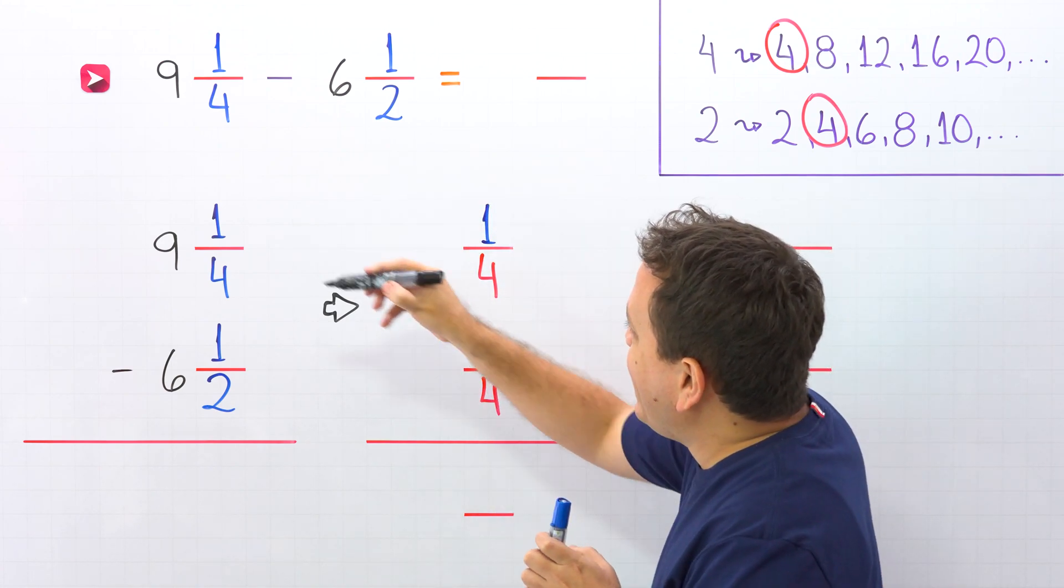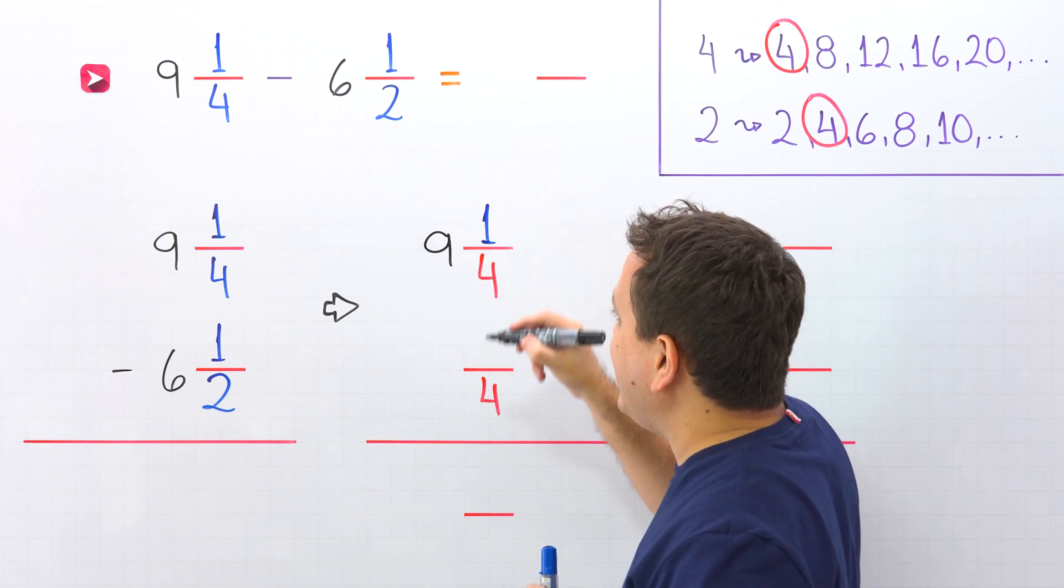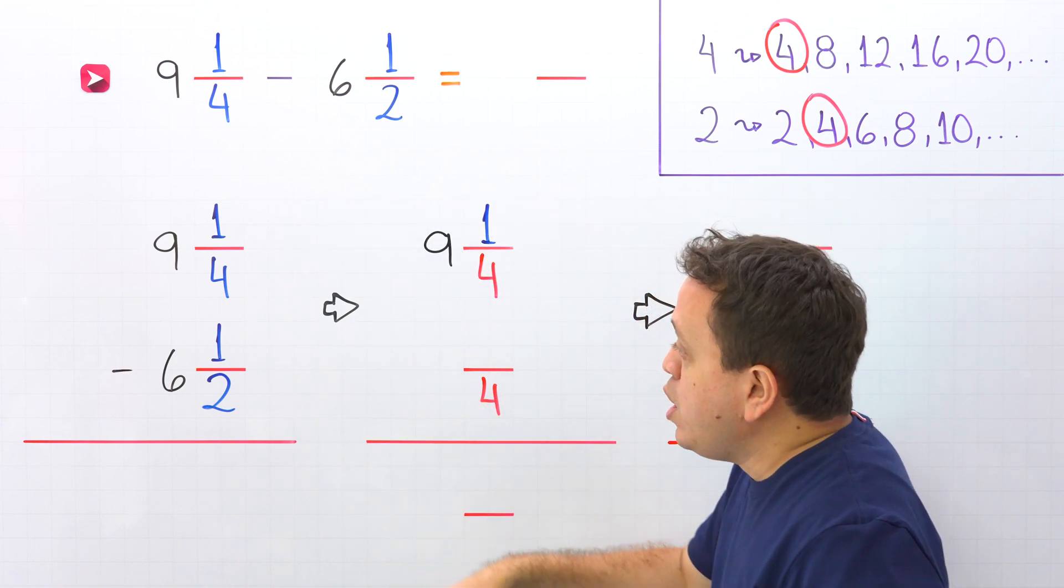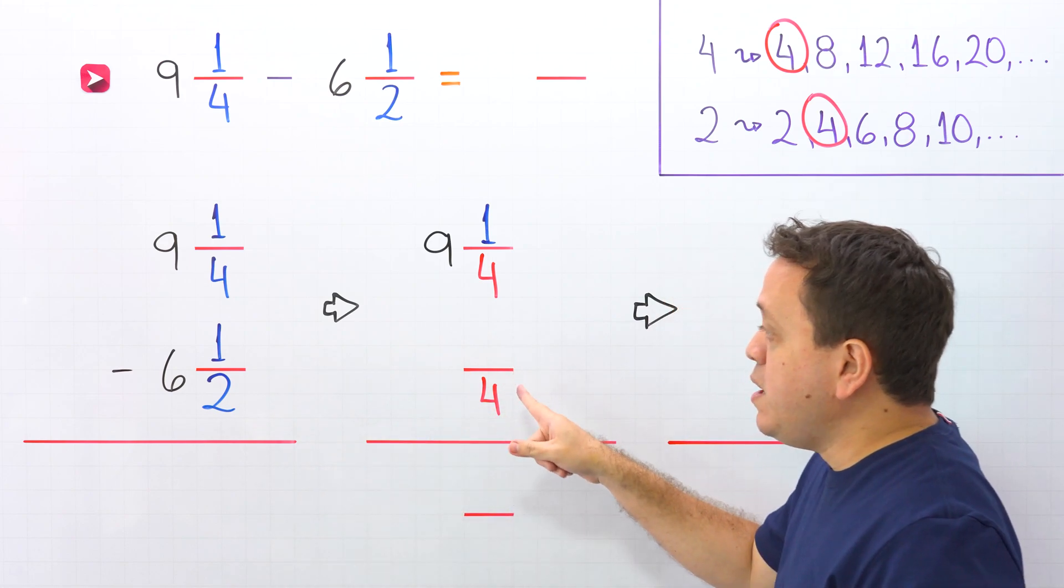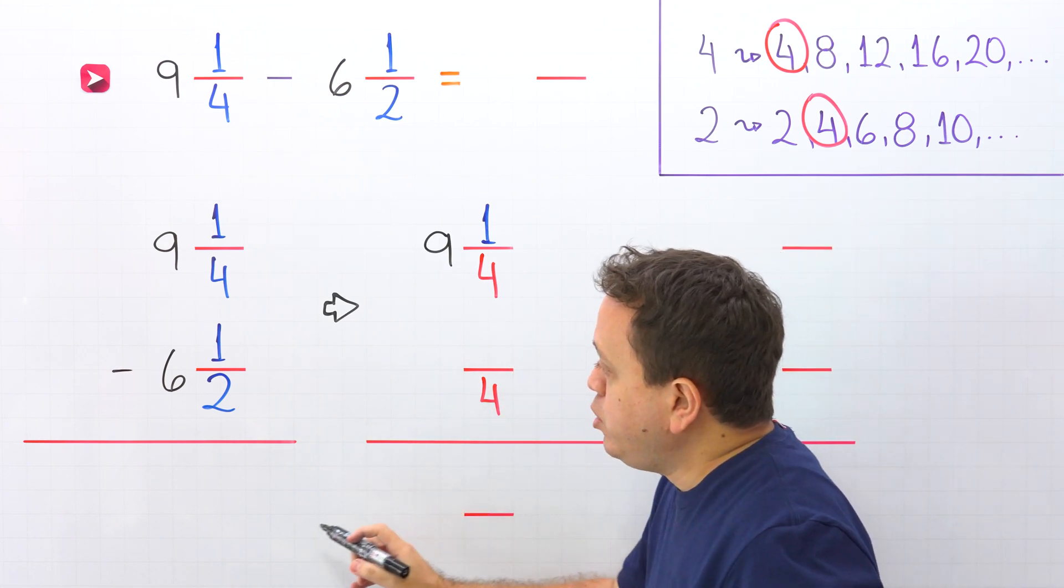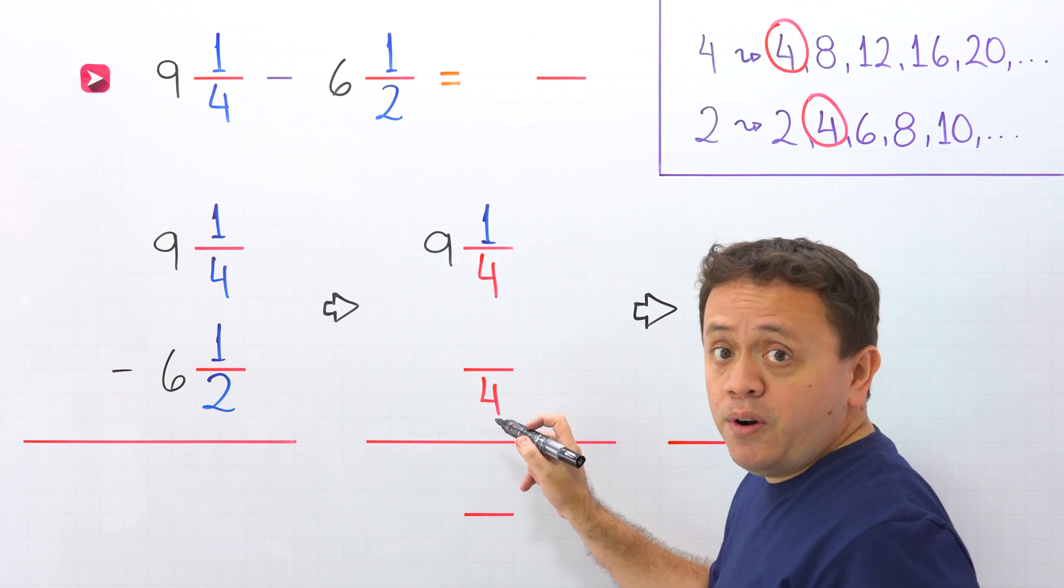Don't forget, the whole number in this case is 9. Let's continue with 1 half. We need an equivalent fraction with a denominator of 4. Pay attention, by what number should we multiply 2 to get 4.